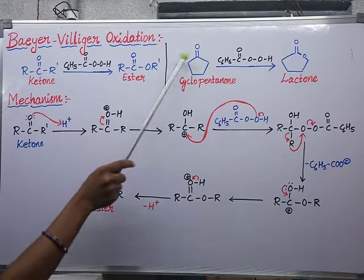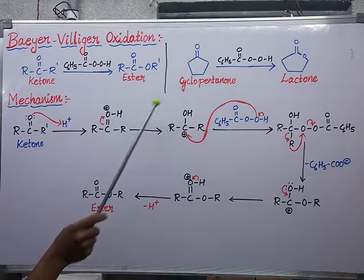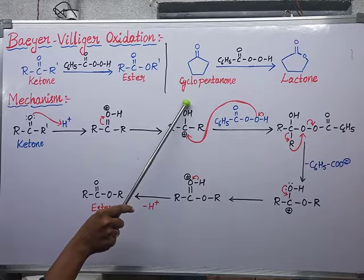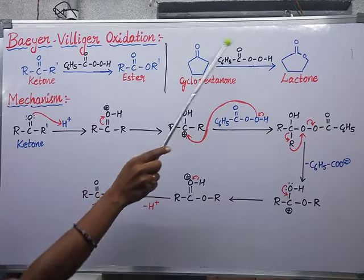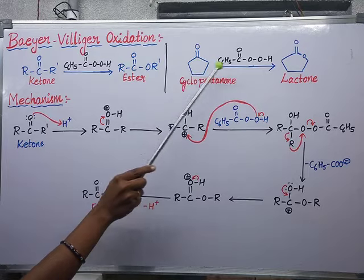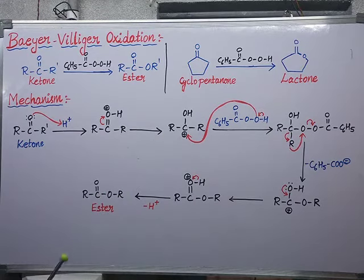Next you can observe cyclopentanone, which is a cyclic ketone. Here you can observe there is an introduction of oxygen beside this carbonyl group taking place. So cyclopentanone is converting into a lactone. Whenever we take cyclic ketones, they convert to lactones.